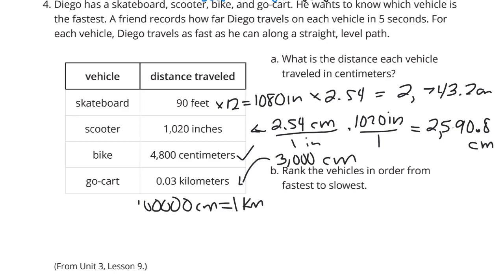So, fastest to slowest, if they all went at the same time, the fastest is going to be the vehicle that traveled the most, the furthest. And so the bike was the fastest, followed by the 3,000 centimeters, so that's the go-kart. Must be a slow go-kart or a fast bike. And then we have the skateboard. And lastly, we have the scooter.